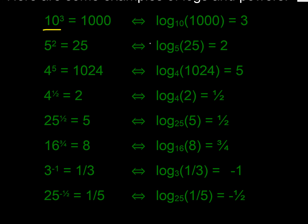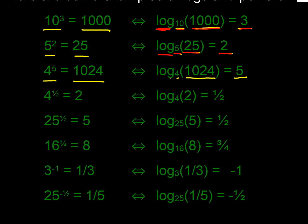Let's look at a few examples. 10 to the power 3 — we know 10×10×10 is a thousand — therefore log base 10 of 1000 is 3: the power we must apply to 10 to get a thousand is 3. We know 5 to the power 2 is 25, so log base 5 of 25 is 2. Similarly, 4 to the power 5 is 1024, so log base 4 of 1024 is 5 — what power must we apply to 4 to get 1024? Answer: 5.